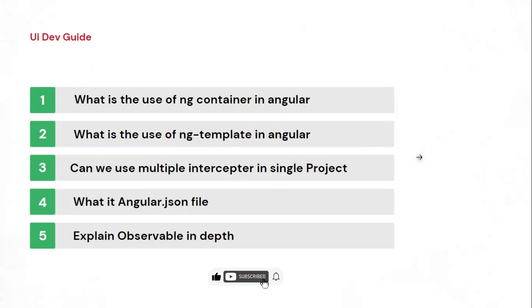The third question is about interceptors. Most of you are aware of interceptors and why we use them in a project. The counter question is: can we use multiple interceptors in a single project? How can we integrate them into the project? They are asking how to include them in NgModule — do we need to add multi equal to true or not? If you are creating multiple interceptors, which interceptor will be triggered first? If you have time, try creating a simple project with multiple interceptors.